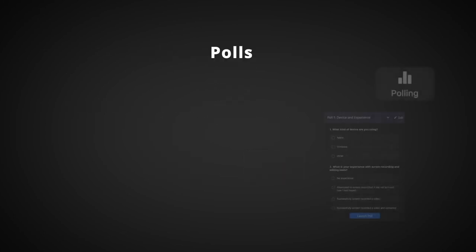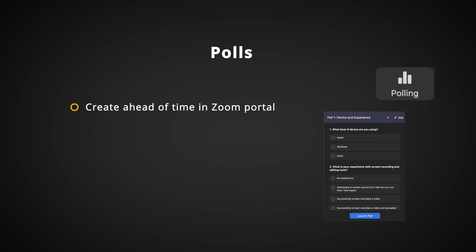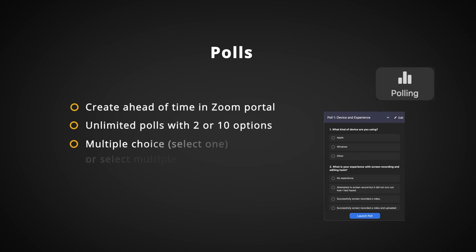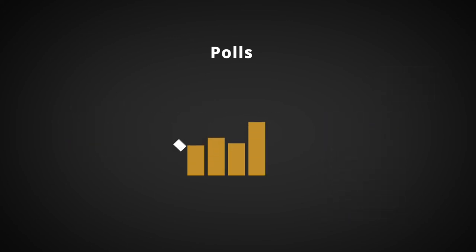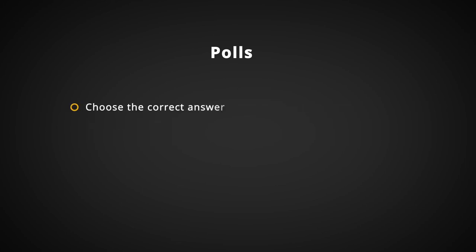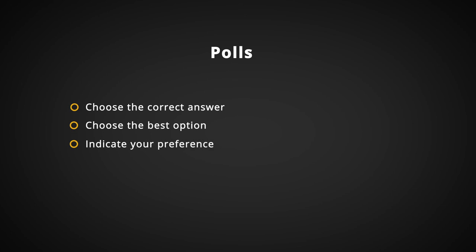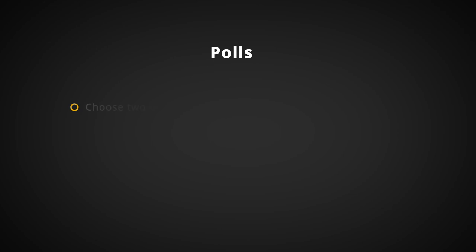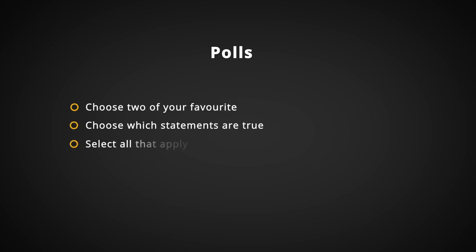Zoom polls provide another way to gain student attention for opinions and to provide formative assessments. They can be delivered ahead of time in the Zoom portal, and unlimited polls may have between two and ten options per question. The types of polls allow one choice or multiple selections. Faculty can show poll responses to the class and save all responses in an Excel file. The same Zoom poll may be delivered multiple times within the same meeting, for example, to compare pre and post-lesson responses. Examples of instructions for one-answer poll questions include: choose the correct answer, choose the best option, indicate your preference. Examples for a multiple-answer poll include: choose two of your favorite, choose which statements are true, select all that apply.